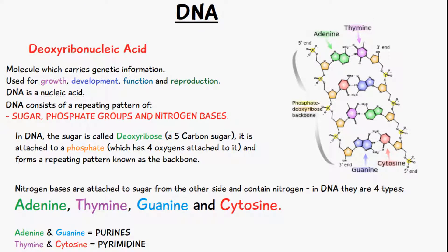The structure of DNA consists of a sugar, a phosphate group, and nitrogen bases. In the diagram here you can see this orange ring, which is the sugar. If you look carefully you can see this P here, which is the phosphate group, and these in the middle are the nitrogen bases.